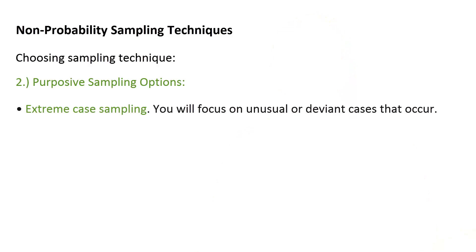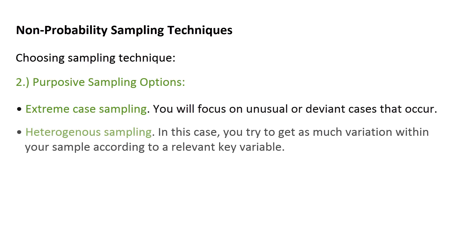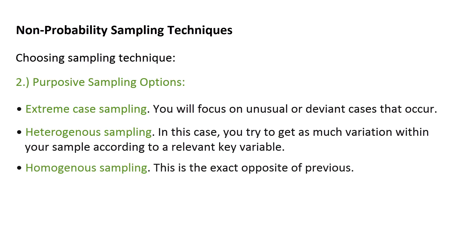There are subcategories of purposive sampling. First is extreme case sampling, where you focus on unusual or deviant cases — the presumption is that examining extreme cases helps you better understand typical cases. Then there is heterogeneous sampling, where you try to get as much variation as possible within your sample by defining one key variable and selecting cases so that characteristic varies as much as possible. On the other hand, homogeneous sampling is the exact opposite — you select cases that differ very little from each other, essentially studying a subgroup of the population.